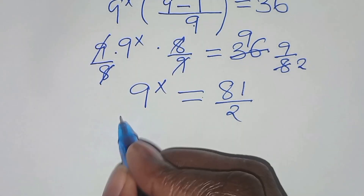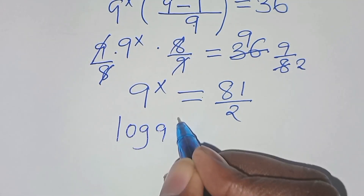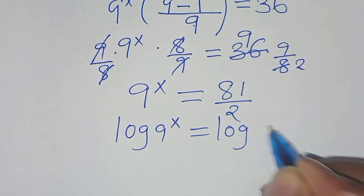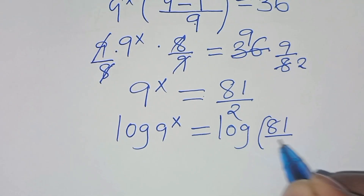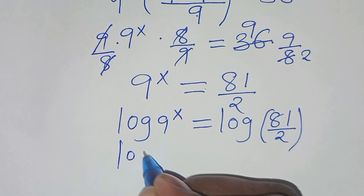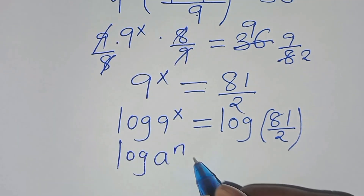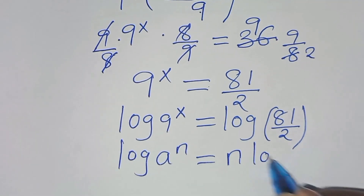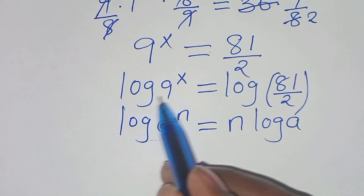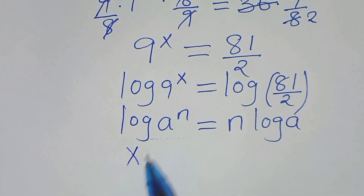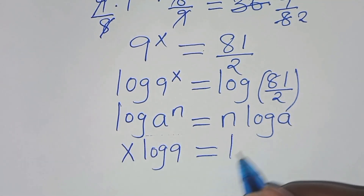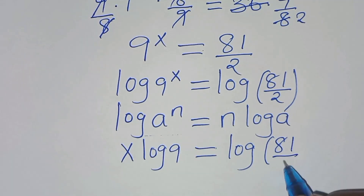To solve for x here, we introduce logarithm on both sides, so we have log of 9 to the power x equals log of 81 over 2. So log 9 to the power x is in the form of log a to the power n, which we can express as n log a. Applying this power property of logarithms, log 9 to the power x becomes x log 9, and this is equal to log 81 over 2.